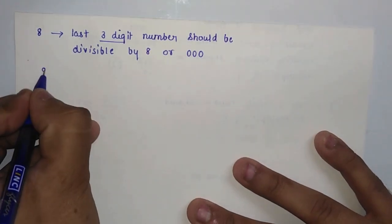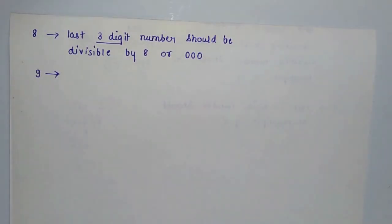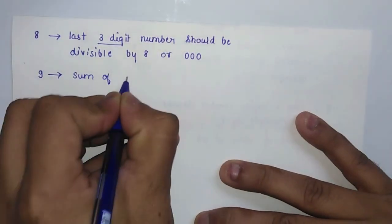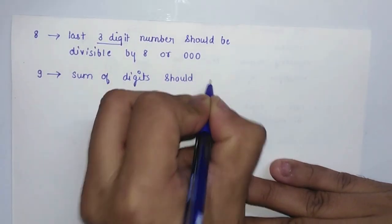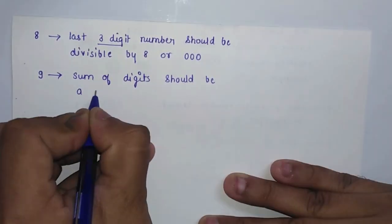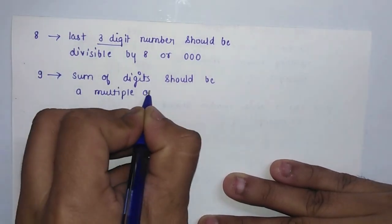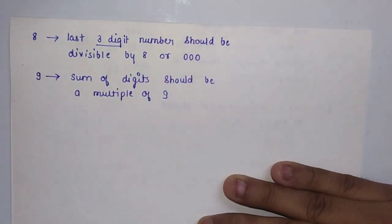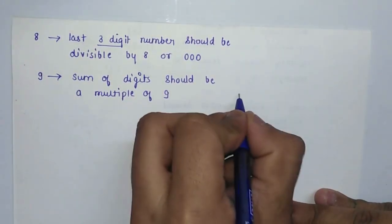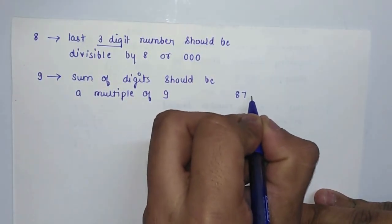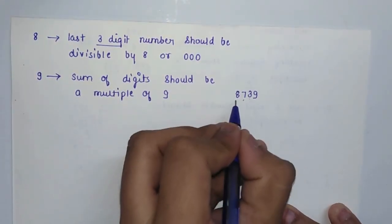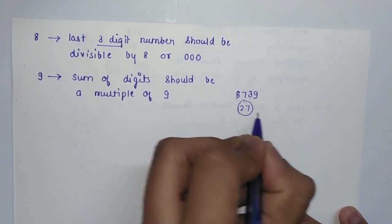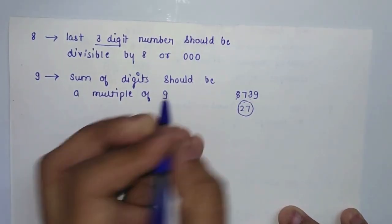The divisibility rule for 9 is also very similar to the rule for 3: the sum of digits should be a multiple of 9. For example, with the number 8,739: 8+7+3+9=27. Since 27 is a multiple of 9, this number is divisible by 9.